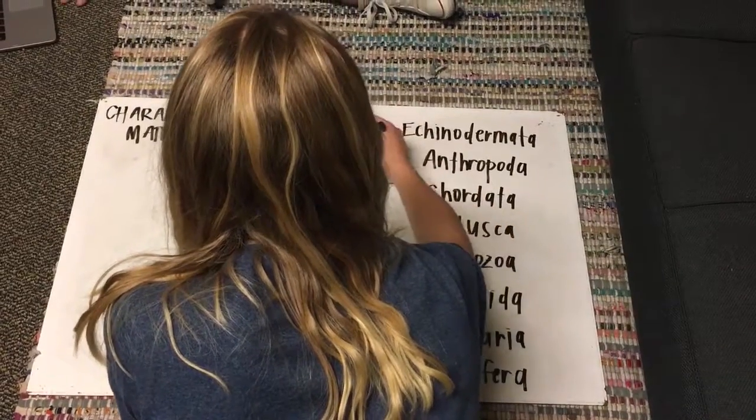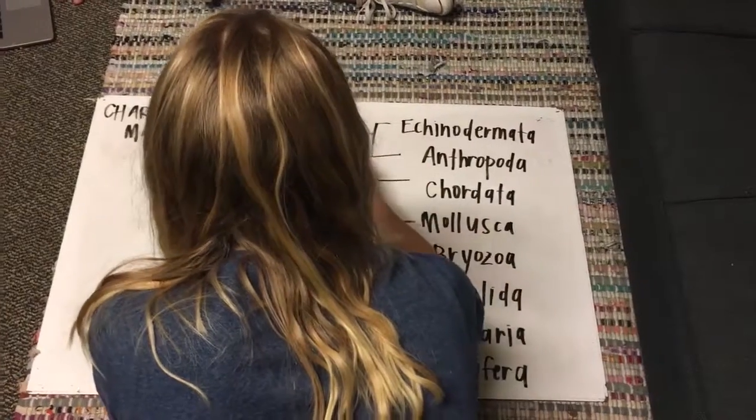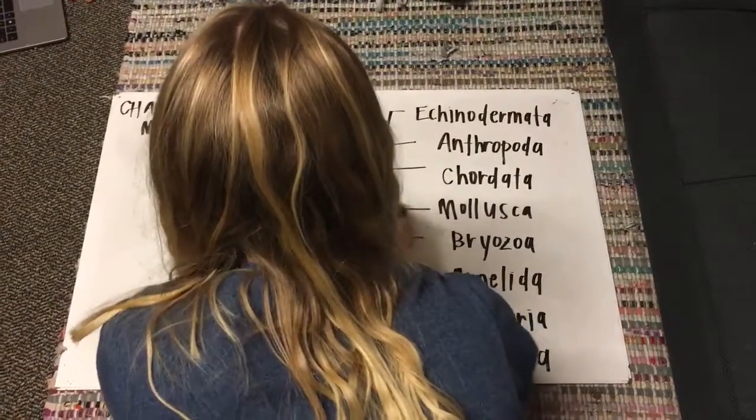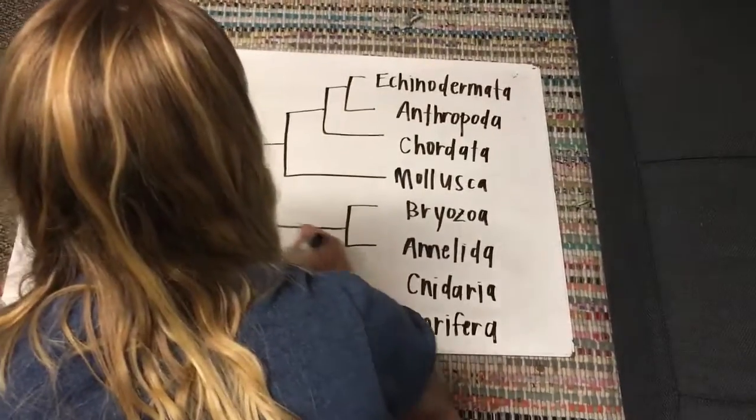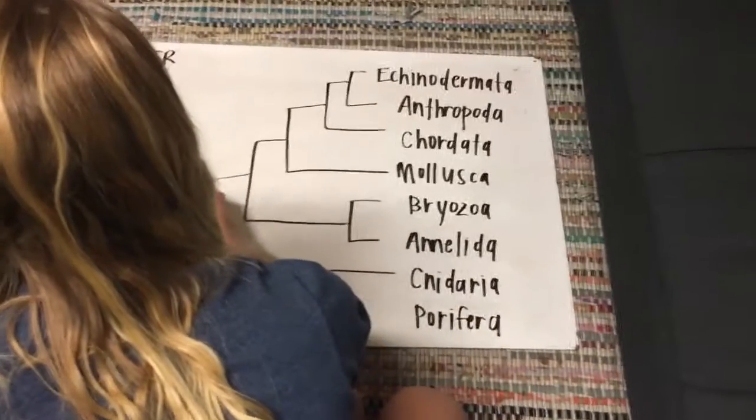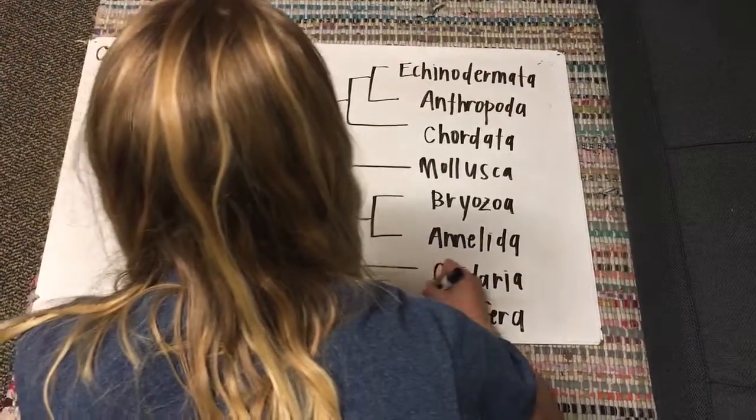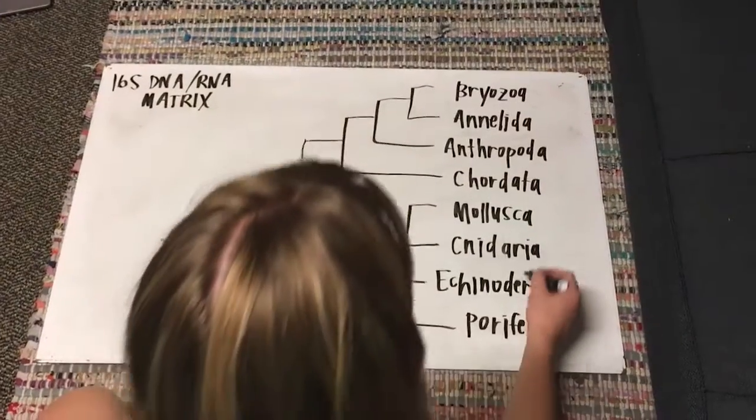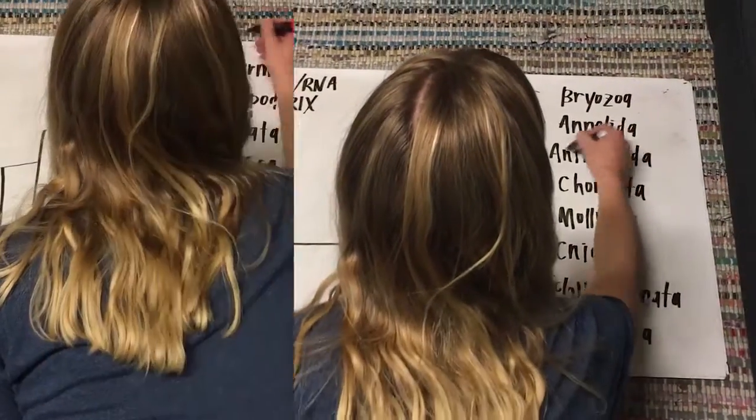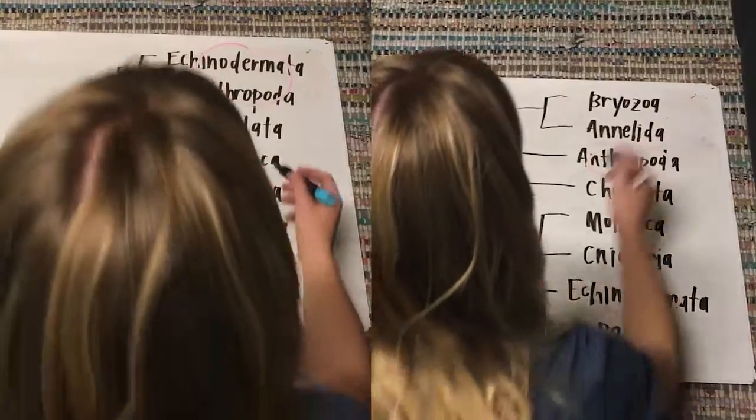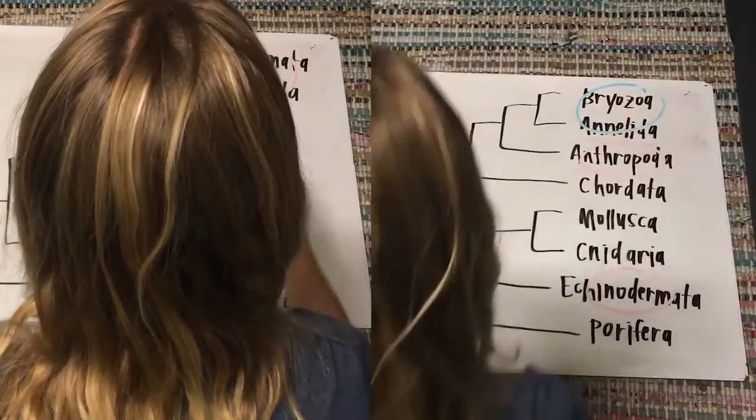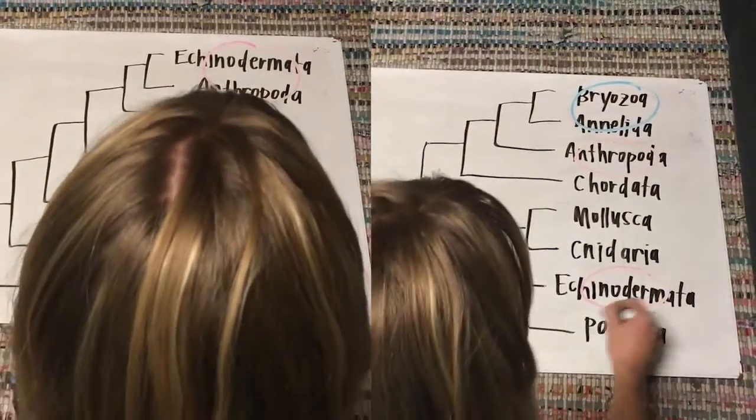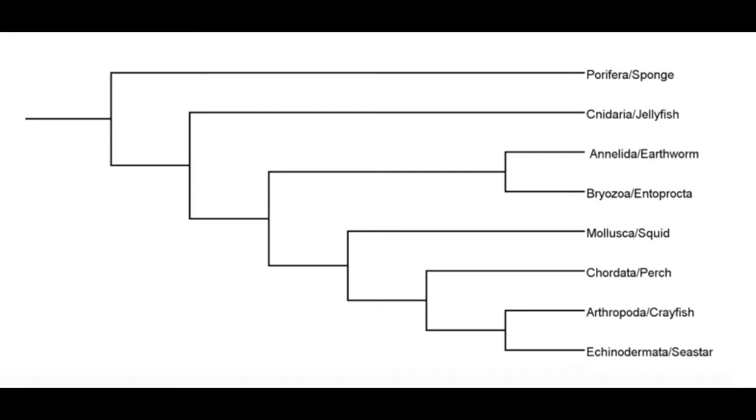Referencing the phylogenetic tree, the closest relative to endoprocts are the phylum Annelida. In the character matrix, the Echinodermata and Arthropoda are grouped together because they share similar traits like tissue, digestion, circulatory system, locomotion, appendages, and food. But both trees group Bryozoa and Annelida together, which makes sense because they have similar worm-like characteristics. Porifera is the outlier for both trees because sponges are the simplest organism represented on the tree.